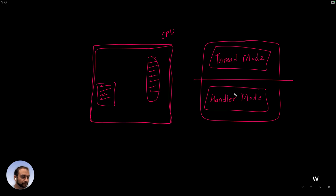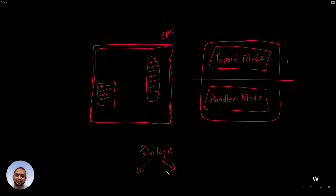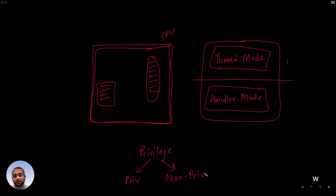Now the interesting bit is about privileges. The M-Class architecture also gives us two varieties of privilege: privileged and non-privileged. Privileged code can access the control, configuration, and status registers. But if the code is executing in a non-privileged scenario, it cannot access the control and status registers.